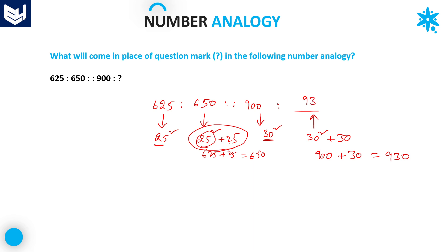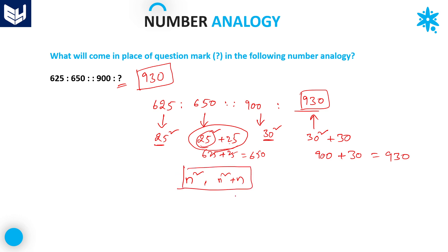Therefore, in place of the blank, 930 should be there. In place of the question mark, 930 is the required answer for this question. In this problem, the logic followed is n squared, n squared plus n. In the first group n is equal to 25, whereas in the second group n is equal to 30. The answer for this question is 930.